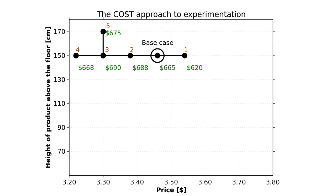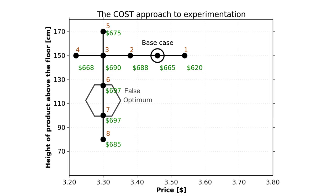So let's go the other direction. Our sixth experiment uses a height of 125 centimetres and records a profit of $697 — a little better than our previous best. We go further down to 100 centimetres and get the same profit of $697. Seems like we've leveled out again. We try one more at 80 centimetres and record a profit of $685. So we've found that selling at $3.30 at a height of either 100 or 125 centimetres gives an hourly profit of $697.